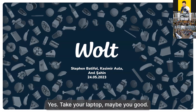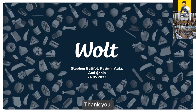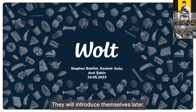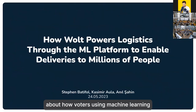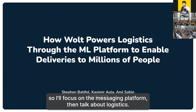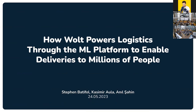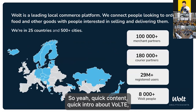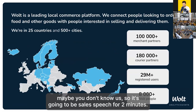I'm Stefan. I work at Vault. Tonight I'm talking with two other people about how Vault is using machine learning for logistics. I work on the machine learning platform. Quick intro about Vault: it started in 2014 in Finland, now in 25 countries, 500-plus cities, 29 million clients, a lot of restaurants, a lot of courier partners — going from Iceland to Japan.